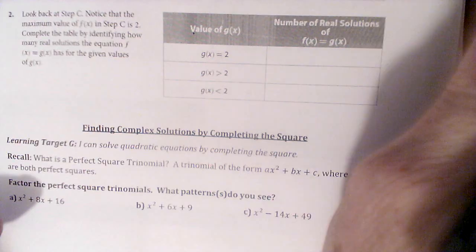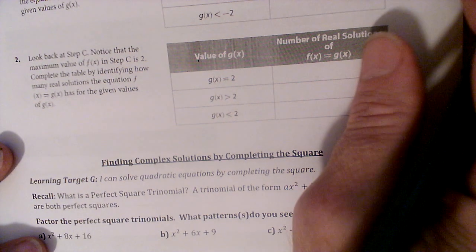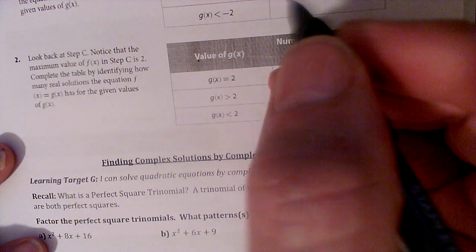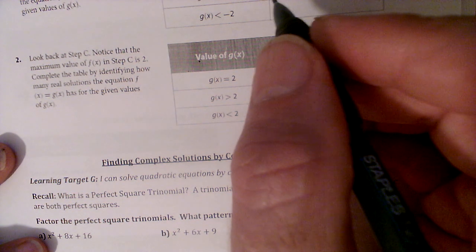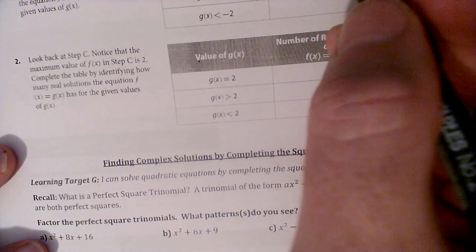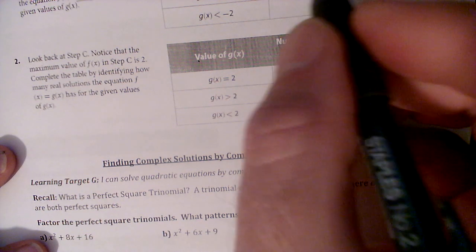So there's a little bit more on the other side. It says look back at steps A and B. Find the minimal value of f of x in each step. And we've got what A and B is. Notice that the minimal value of f of x in steps A and B is negative 2. Complete the table by identifying how many real solutions the equations f of x equals g of x has for the given value.